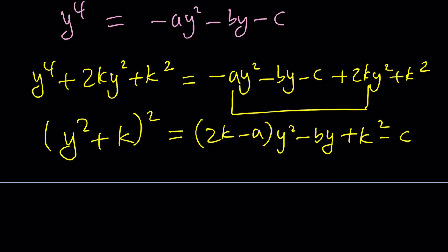And now, the right-hand side also needs to be a perfect square, which means its discriminant, or delta, is 0. This is where you get your cubic, of course, in this case.